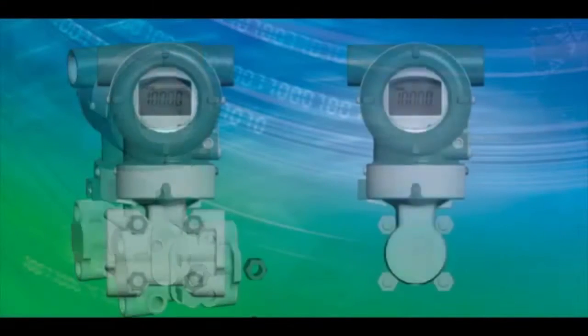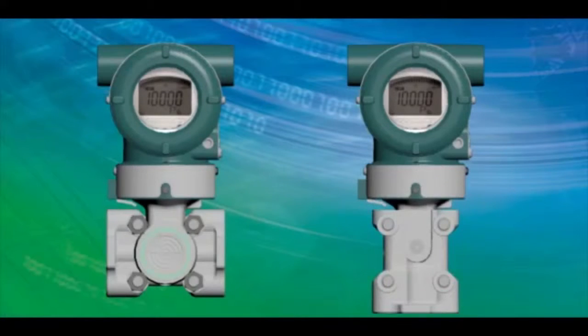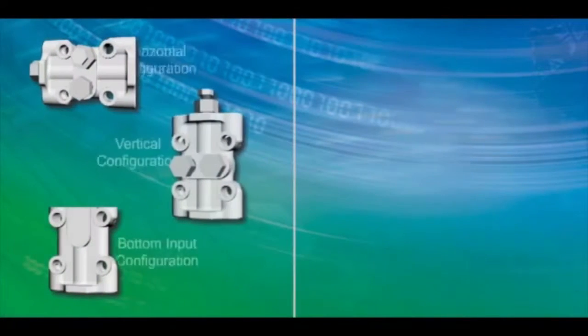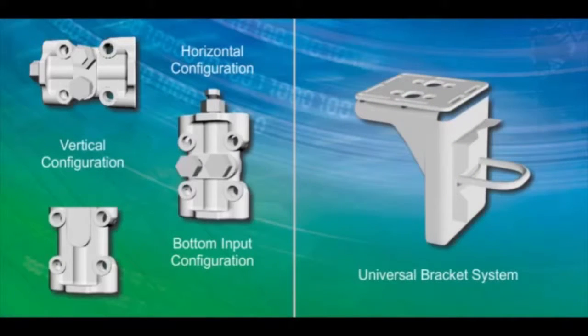There are many types of pressure transmitter mounting configurations for new and replacement installations. Using the DP-HARP universal mount flanges and the universal mounting bracket, almost any installation can be achieved.